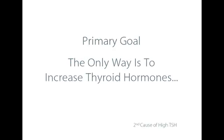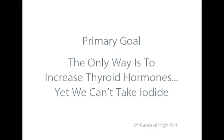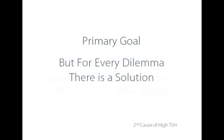The primary goal in the first phase is to reduce TSH, but how? The only way is to increase thyroid hormones — if we can improve thyroid hormone levels, TSH will decline. But we can't just take iodide, because iodide will increase TSH. Yet the thyroid gland cannot produce thyroid hormones without iodide. I'll explain in the next presentation how we can improve thyroid hormones to bring down TSH without taking iodide.